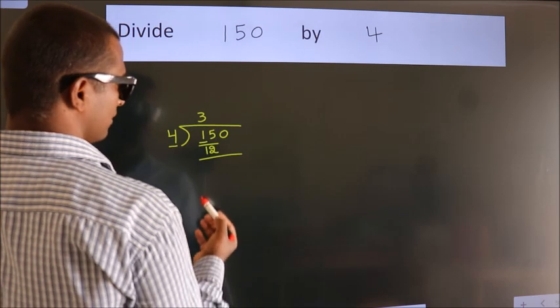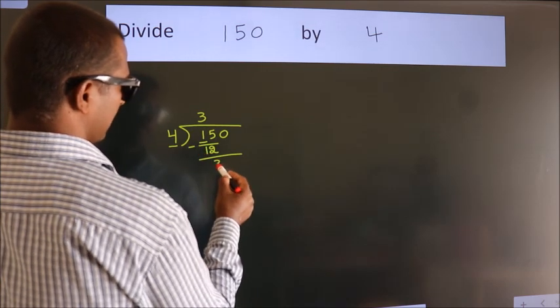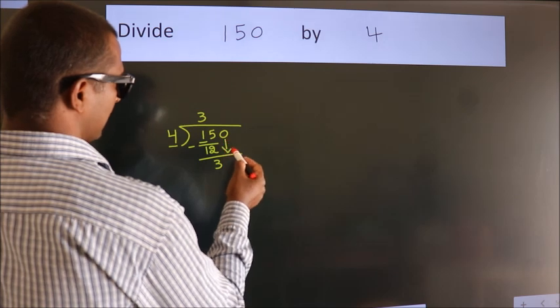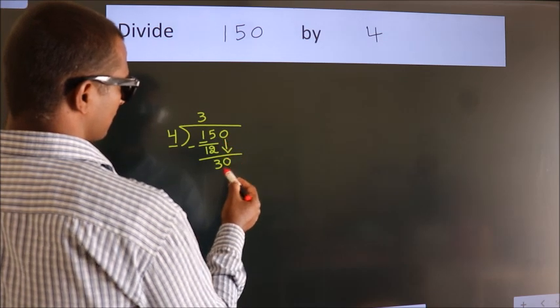Now we should subtract. We get 3. After this, bring down the next number. So 0 down. So 30.